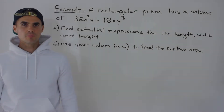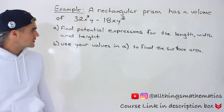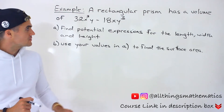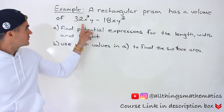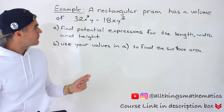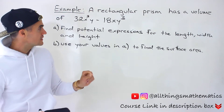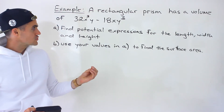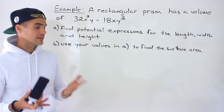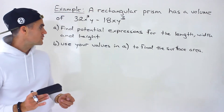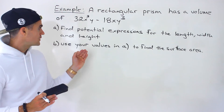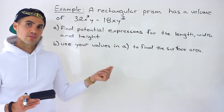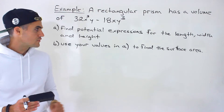What's up everyone, Patrick here, welcome back. Moving on to another word problem dealing with factoring. We're told a rectangular prism has a volume of the expression 32x³y minus 18xy³, and we have to find potential expressions for the length, width, and height of the prism. Then in part b, we have to use those values from part a to find the surface area of the prism.